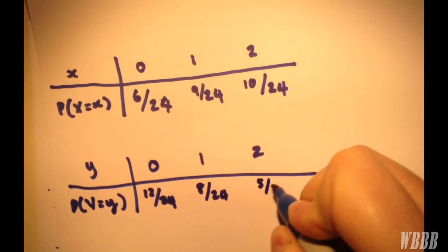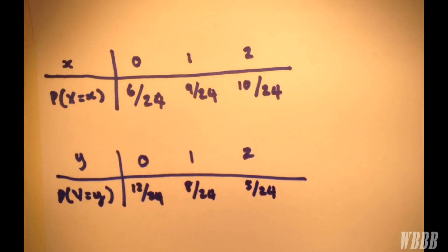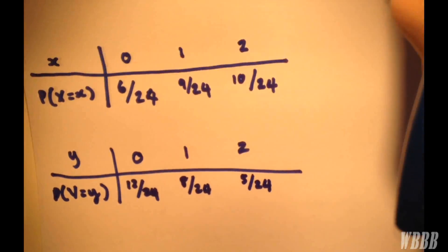So that's how we find the marginal probability distributions.